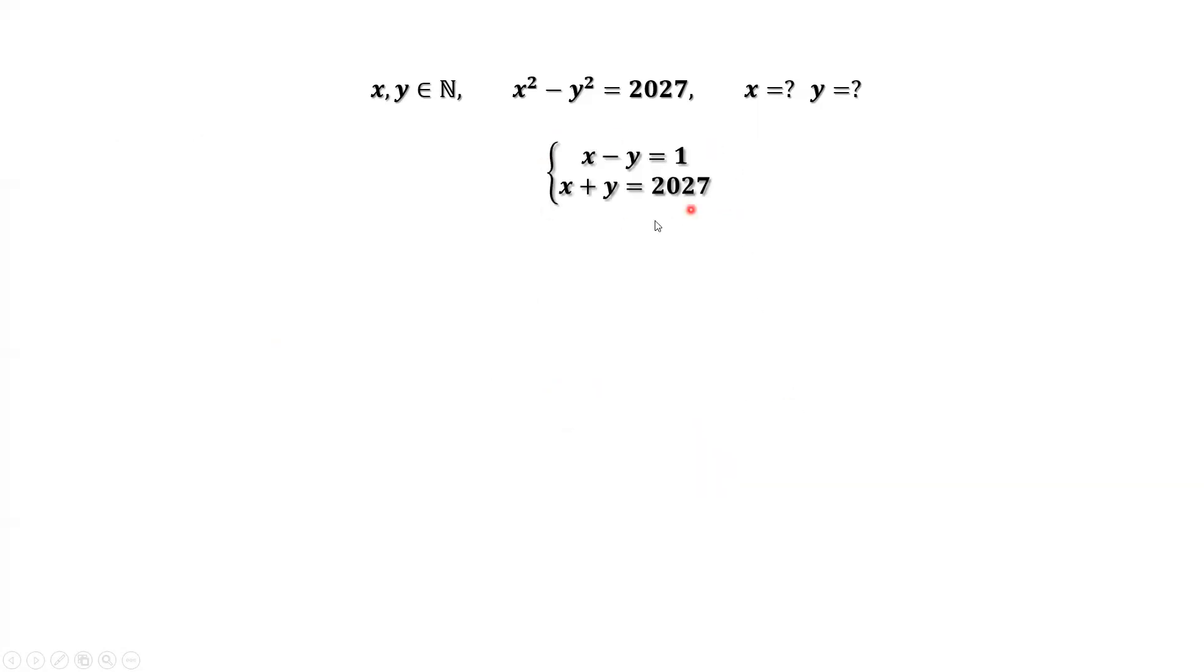Solve this equation, we can find x and y. The first equation plus the second equation. We have the left-hand side. x plus x, that's 2x. Negative y plus positive y cancel. The right-hand side, that's 2027 plus 1, which is 2028.